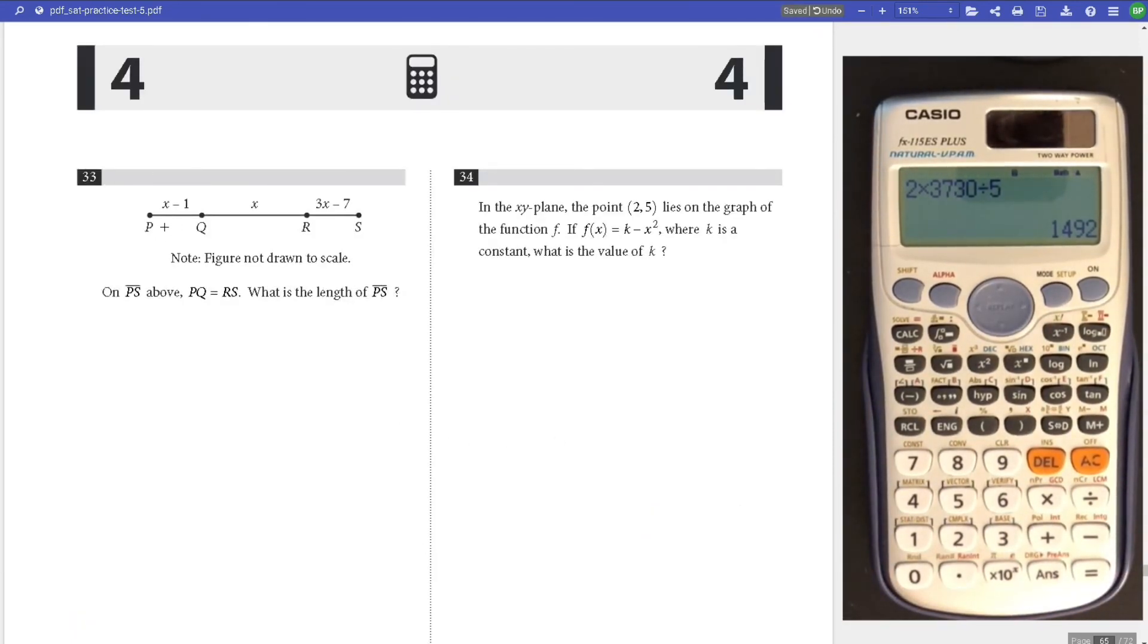Number 33, if PQ equals RS, what is the length of PS? Let's set PQ and RS equal to each other to solve for x first. 2x equals 6, x equals 3. Now plug it in. This will be 2, this will be 3, this will be 2. 2 plus 3 plus 2 is 7 for the total length.